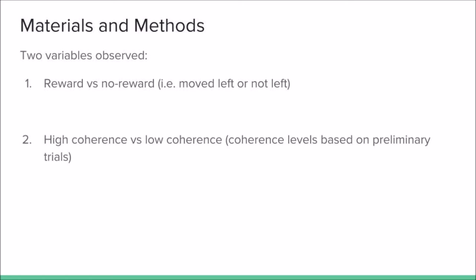High coherence means the dots all move strongly and closely in one direction. Low coherence means the dots move more spread out in a direction. Preliminary coherence tests were conducted prior to the actual trials to determine participants' threshold for dot movements.